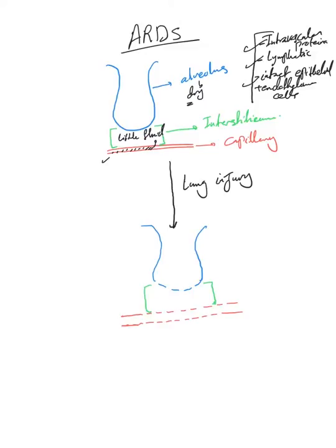And the third thing which is very important is the epithelium here and the endothelium here are intact. So the leak is very minimal because of these things. The alveolus remains dry and there is little fluid in the interstitium, and the oxygenation is fine.